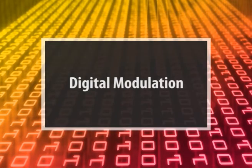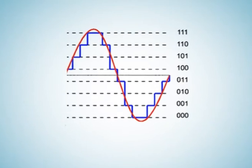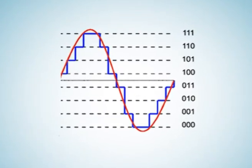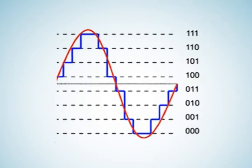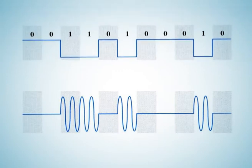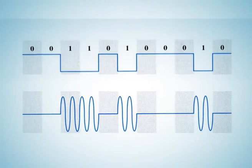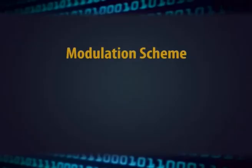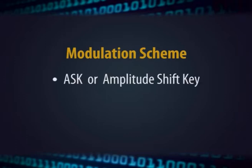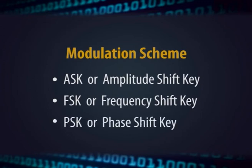Digital modulation means an analog carrier signal is converted by a digital data bitstream. Digital modulation is somewhat similar to analog modulation, except the baseband signal is of discrete amplitude levels. For a binary signal, it has only two levels — either high (logic one) or low (logic zero). The main modulation schemes are three types: ASK or amplitude shift keying, FSK or frequency shift keying, and PSK or phase shift keying.